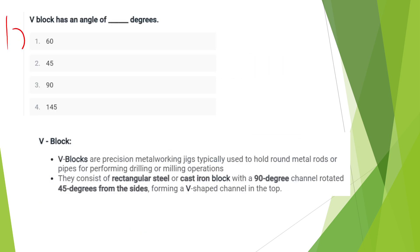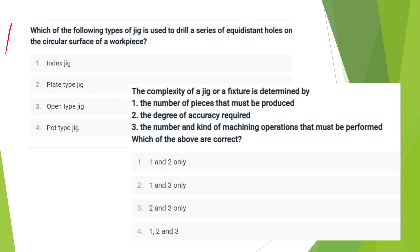A V-block has an angle of 90 degrees. It is a rectangular steel and cast iron block with a 90-degree channel, rotated 45 degrees on each side. An index jig is used to drill a series of equidistant holes on the circular surface of a workpiece.